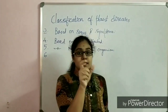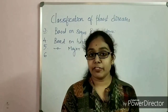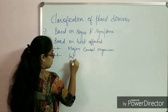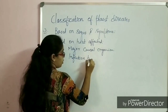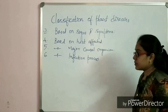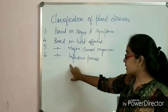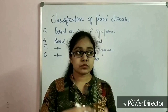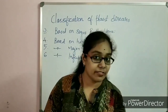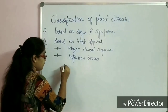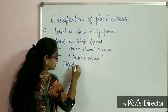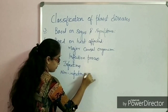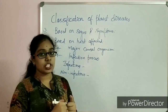In the sixth category, we classify plant diseases based upon the infection process. Based on the infection process, we classify plant diseases into two types: infectious disease and non-infectious disease.